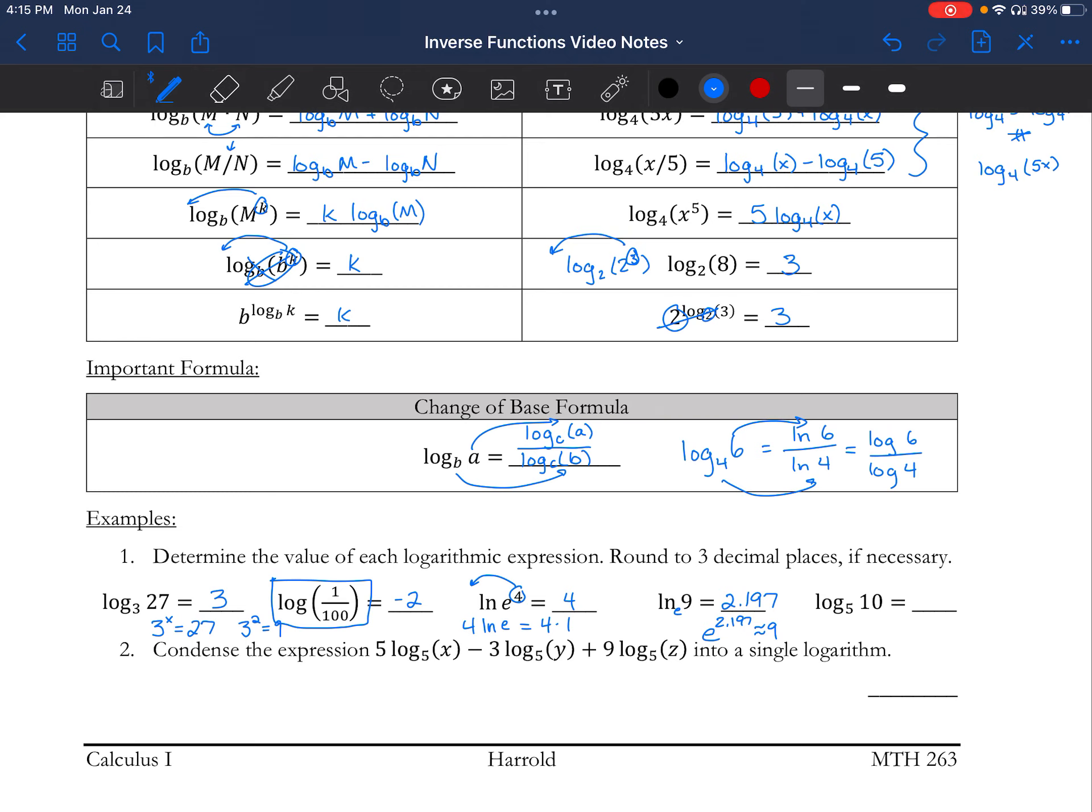This last one, log base 5 of 10. Not every calculator has a button where you can type in any base down here. A lot of the new ones really do, but if your calculator does not, or you're just not sure how to do it, you can always type in log 10 divided by log 5, or ln 10 divided by ln 5. It should give you the same answer either way, so log base 5 of 10 gives me 1.43, and it says round to 3 decimal places, so I'll round up to .431. The answer that I actually get in the calculator is 1.4306, so you have to round that 0 up.